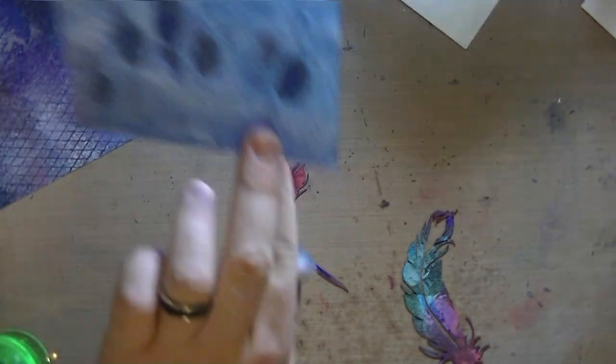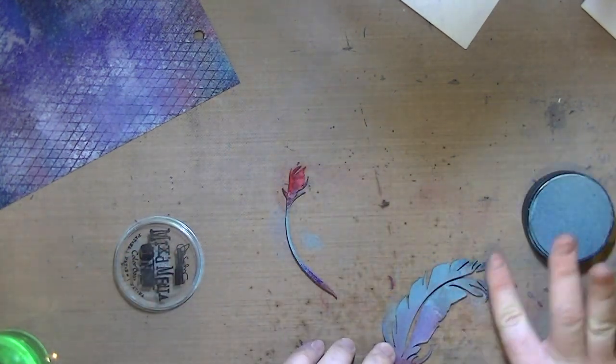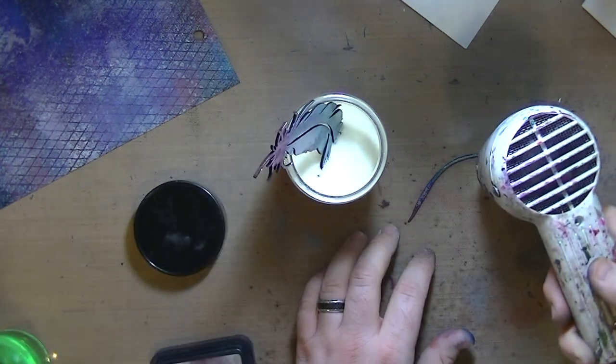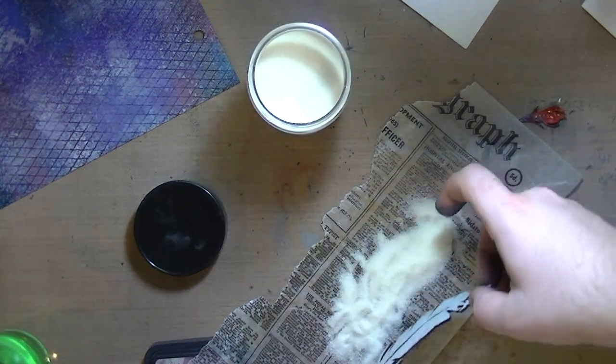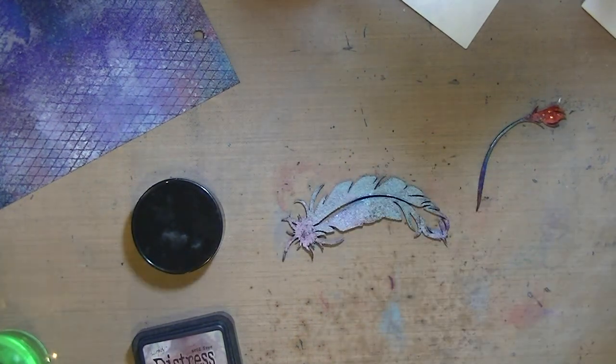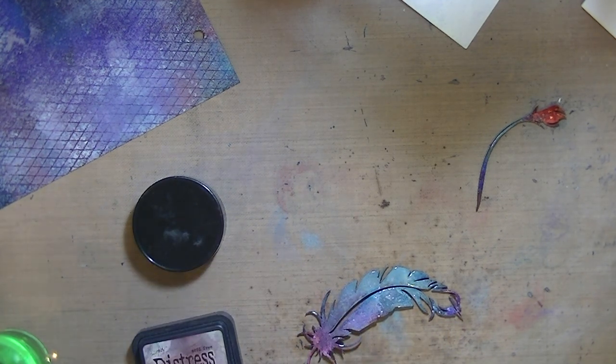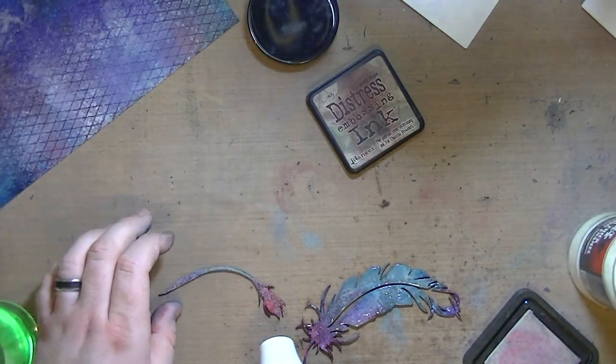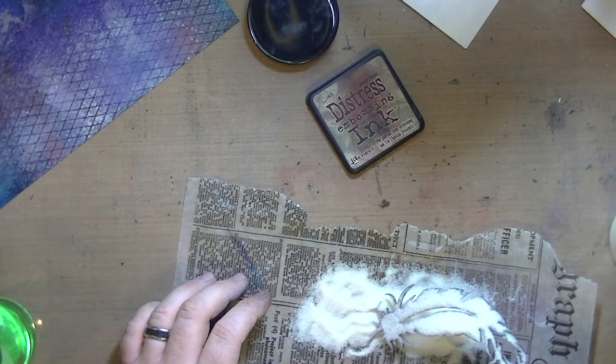I'm using my Donna Salazar mixed media inks in barn schoolhouse, which was the red, and patina, which is that really pretty soft blue. Then I dried them mostly and covered them in distress embossing ink and UTEE. Normally I only do one layer of UTEE because I like that funky chunky look, but this time I wanted kind of a smooth enamel look so I did two layers of the distress embossing ink and then the UTEE. I overheated this large feather in one area so it got a little cloudy but that's okay.